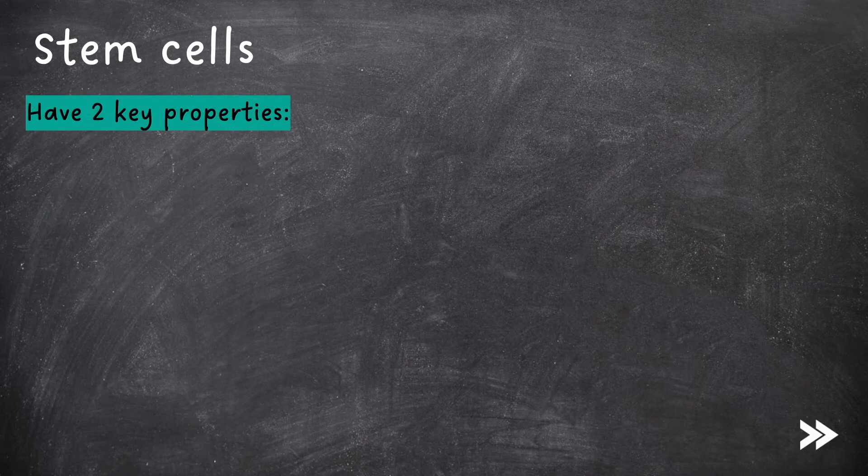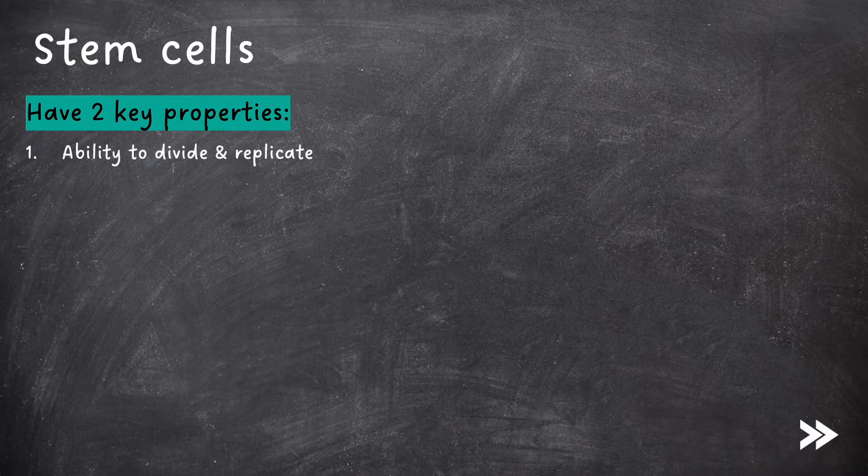Stem cells have two key properties. They have the ability to divide and replicate, and potency, which is the ability to become specialized.